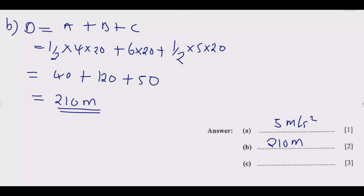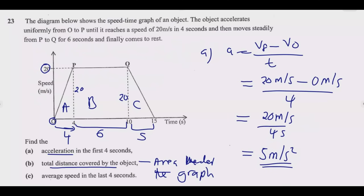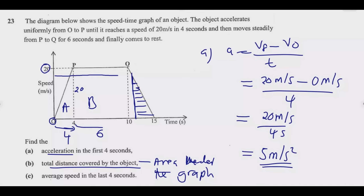Now we find the average speed in the last four seconds. Pay attention to this question — where is the last four seconds? The last four seconds starts from the 11-second mark. We're looking at that region. To find the average speed, we first need to find the velocity at that point — the 11-second mark — and then we can proceed.